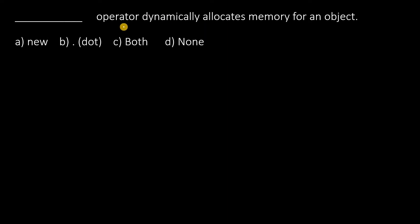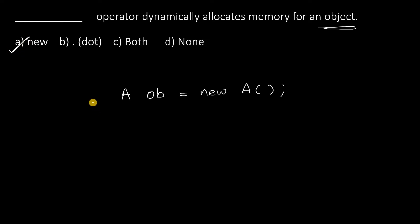Dash operator dynamically allocates memory for an object. The answer is the new operator. For example, A is a class and we are creating an object ob. We get the memory for this object by using the new operator. So, the answer is new.